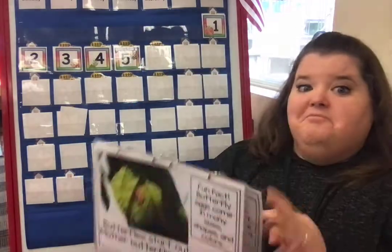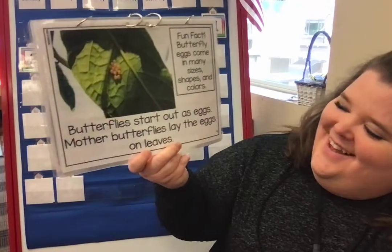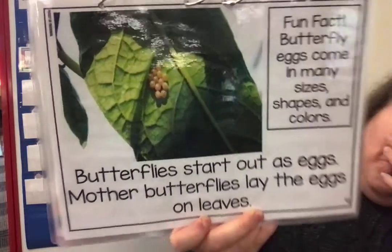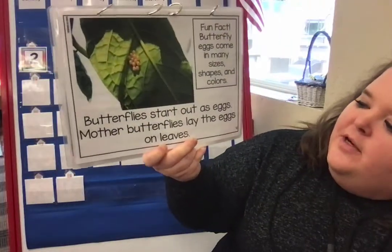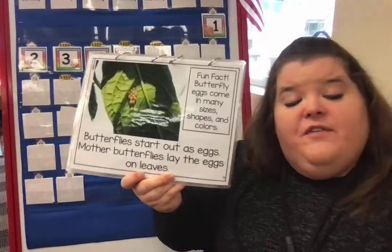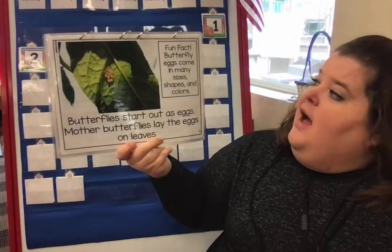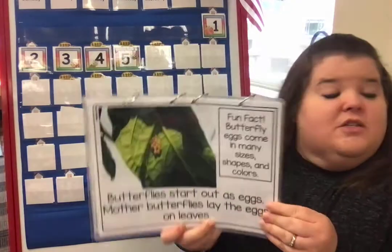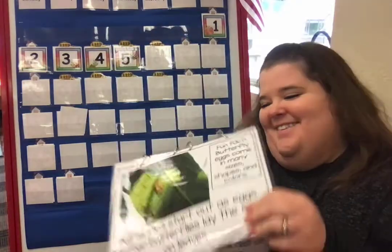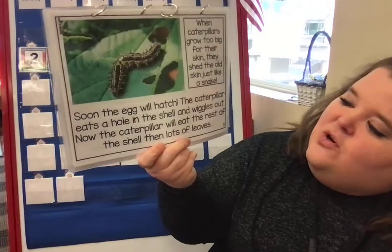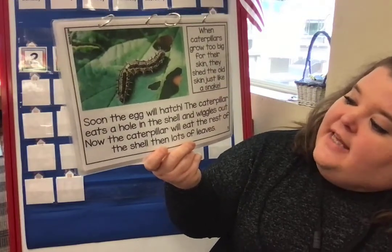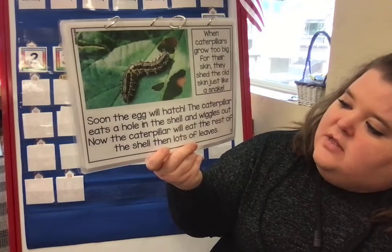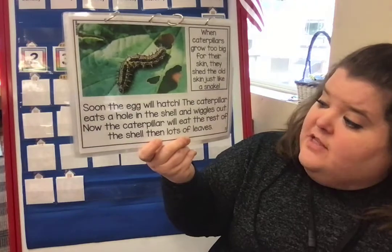Nectar is the sweet juice in the middle of the flower — did you know there's juice in the middle of a flower? We're learning so much! Butterflies start out as eggs. Here we have some eggs on a leaf. The mother butterfly lays the eggs on the leaf and leaves them there. Butterfly eggs come in many sizes, shapes, and colors. Soon the eggs will hatch and the caterpillar eats a hole in the shell and wiggles out.